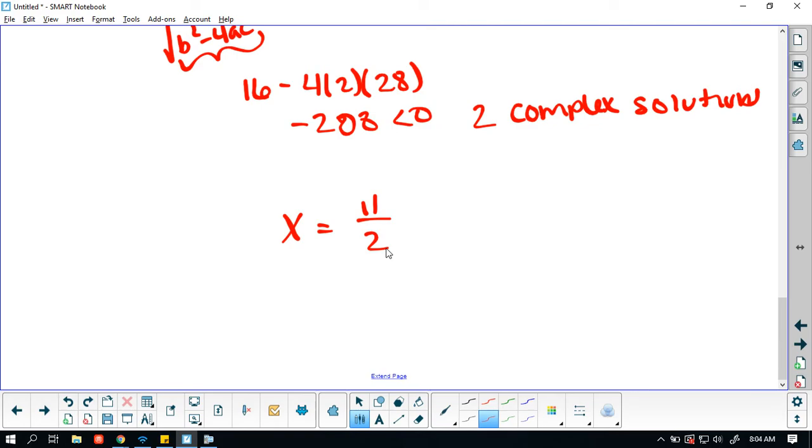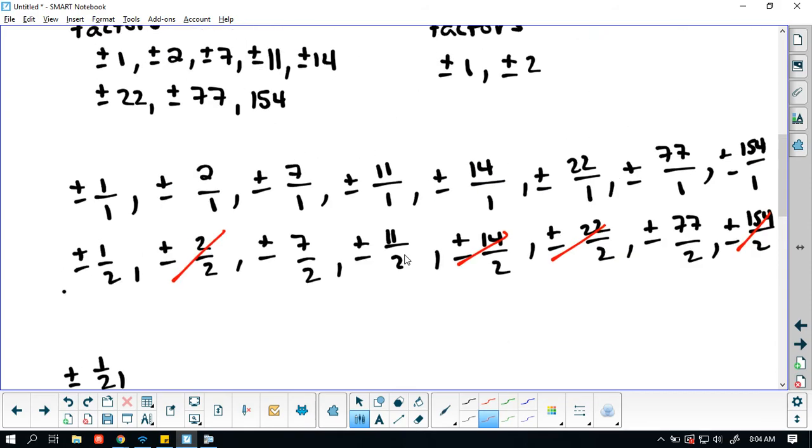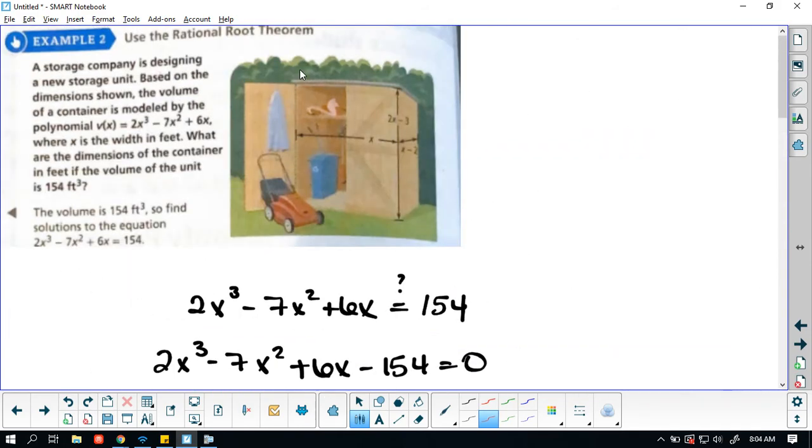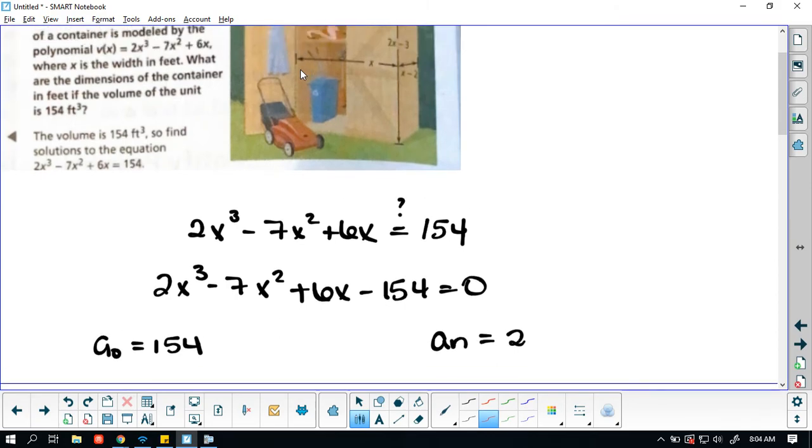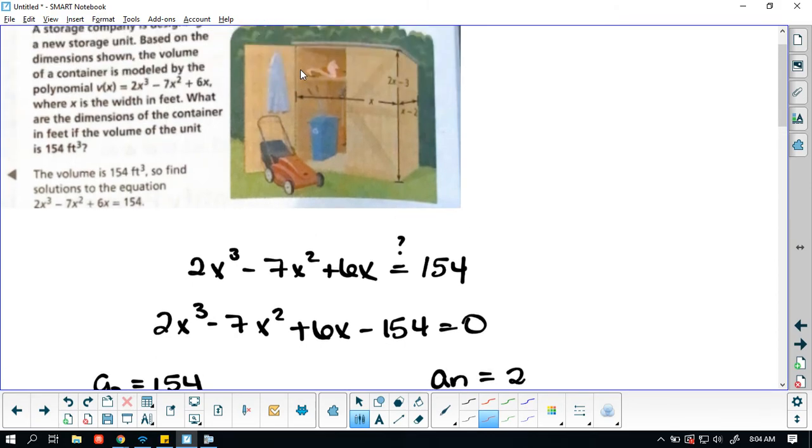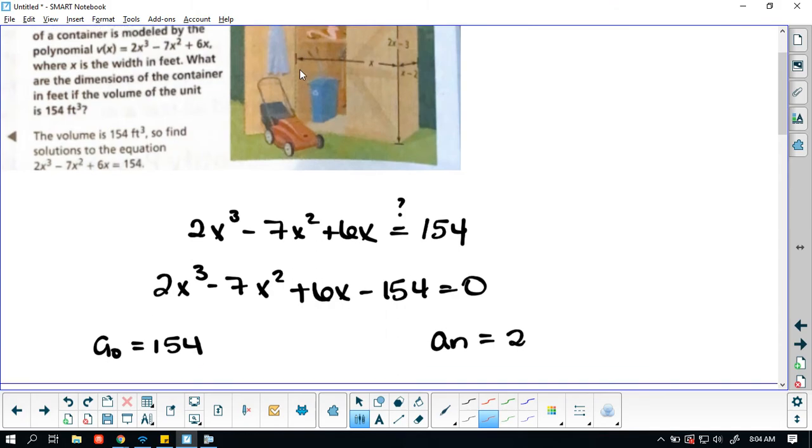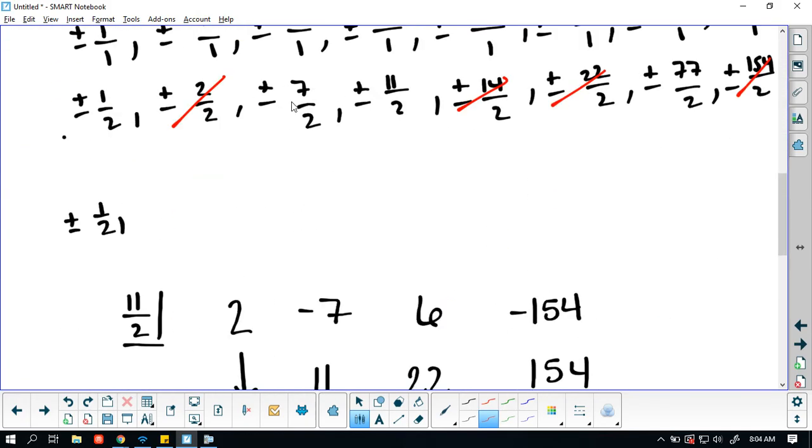So the only real solution to our equation is going to be 11 divided by 2. So the width of the container, remember now x is representing the width of the container. So the width of the container is 11 divided by 2, or 5 1⁄2 feet. The length is going to be 11 by 2 minus 2, or 3 1⁄2 feet. And the height is going to be 2 times 11 divided by 2 minus 3, or 8 feet.